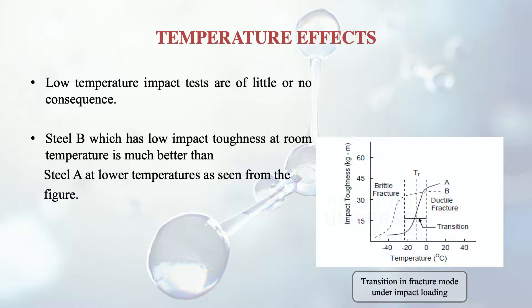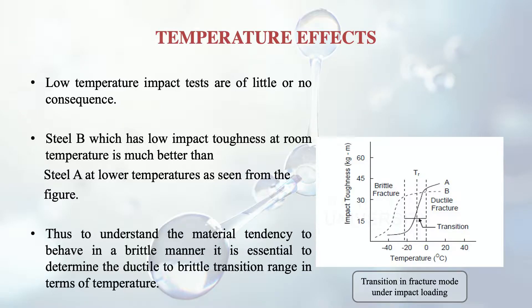If the Charpy and IZOD tests are performed only at room temperature, they are not of very much value. From the graph, Steel B has lower impact toughness at room temperature compared to Steel A, but in the range of 0 to minus 20 degrees, Steel B is much better because there is no sharp decline from ductile to brittle. The room temperature impact test does not give sufficient results. To understand a material's tendency to behave in a brittle manner, it is essential to determine the ductile-to-brittle transition range in terms of temperature.